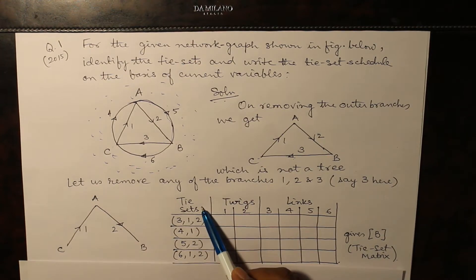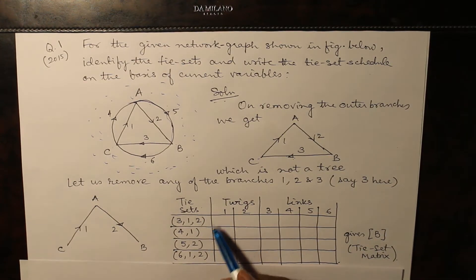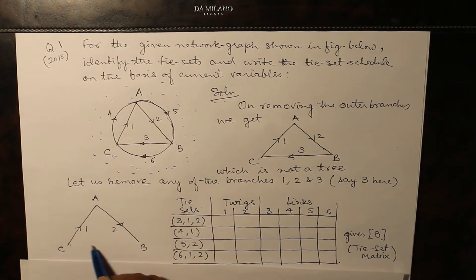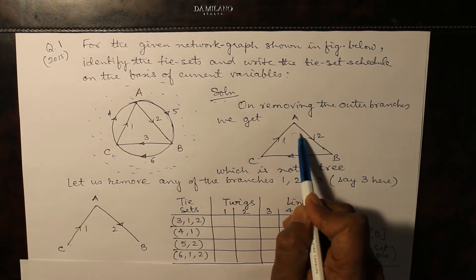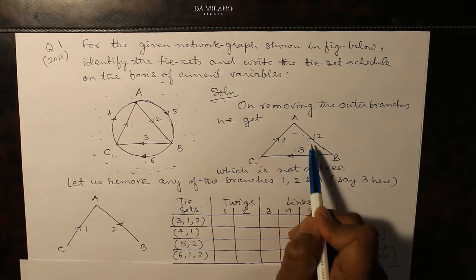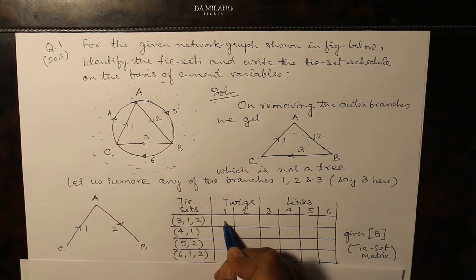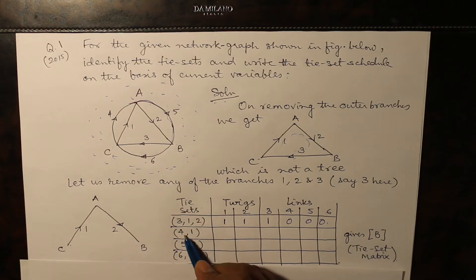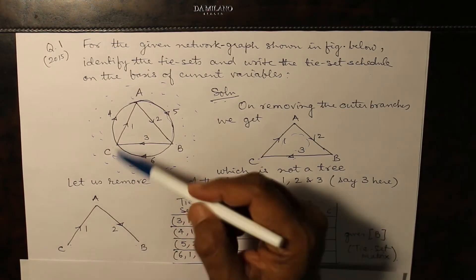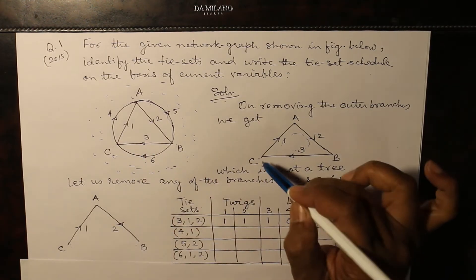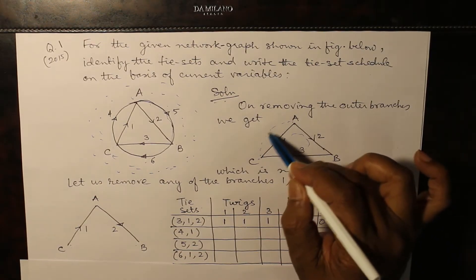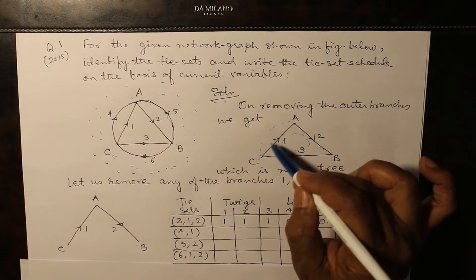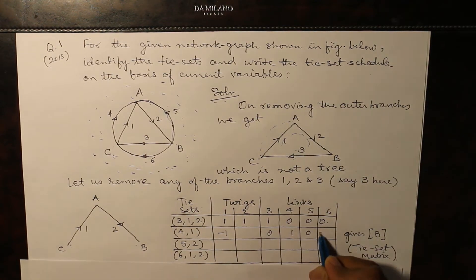We are asked for the tie set matrix, so we add links one by one. When we add link 3, branches 1 and 2 are in the same direction. When we add link 4, branch 4 and branch 1 are in opposite directions — the direction of 1 is reversed — and the rest are 0.